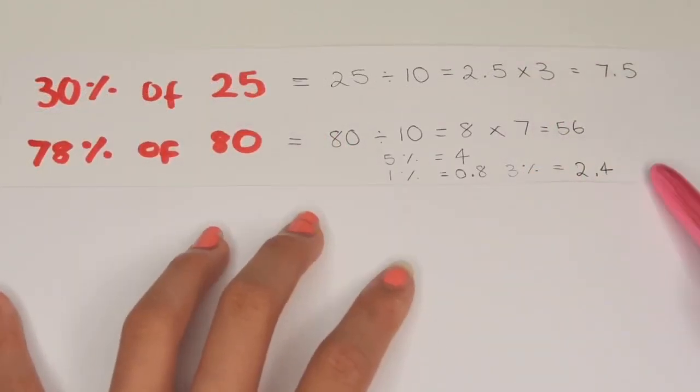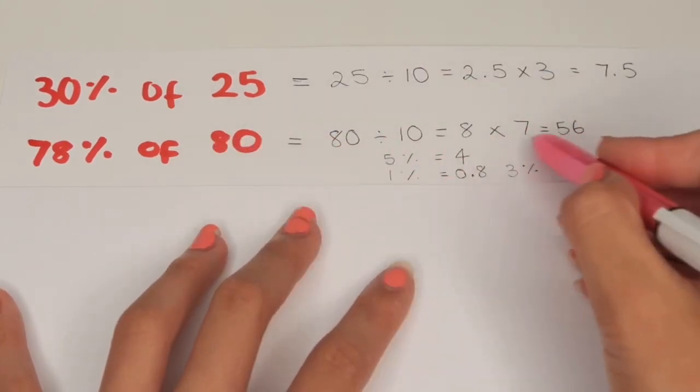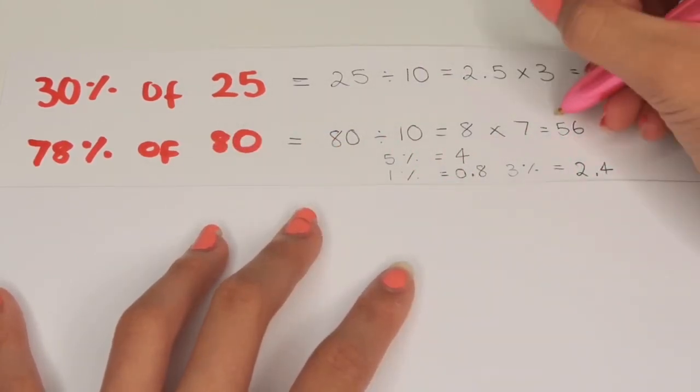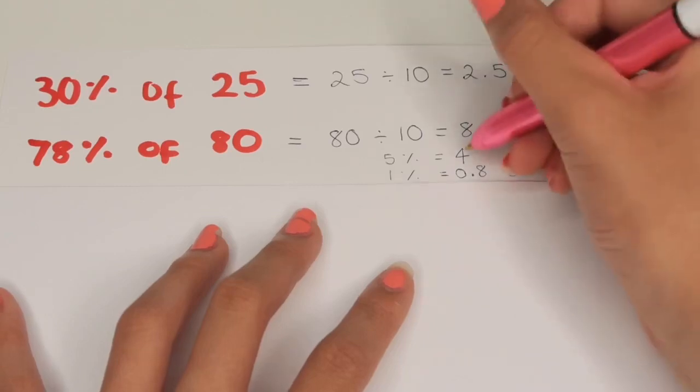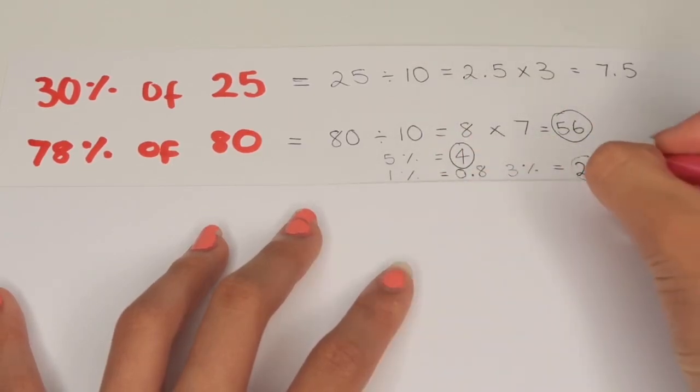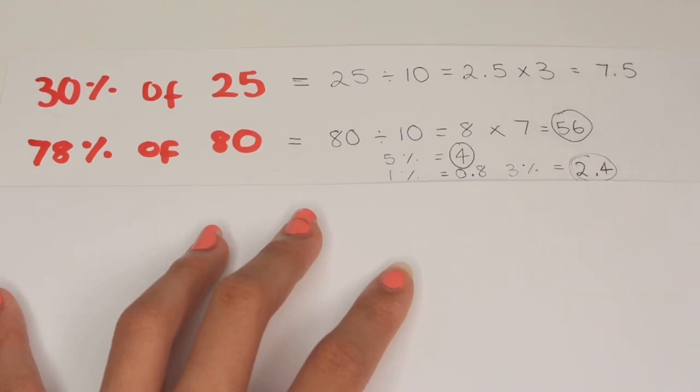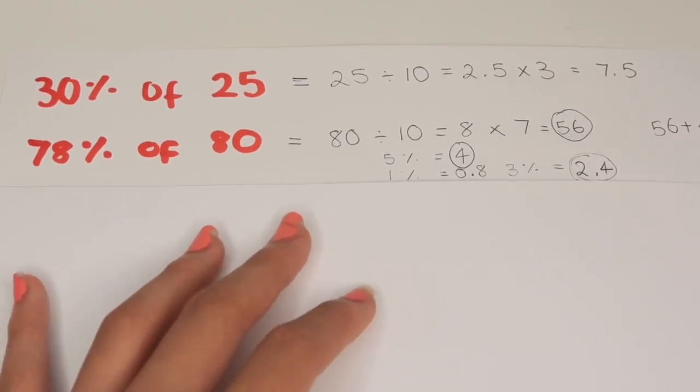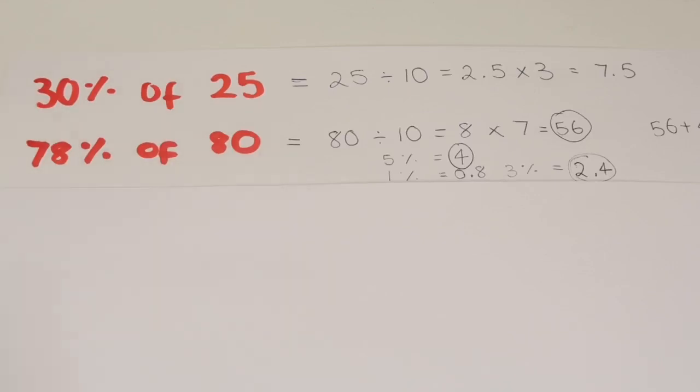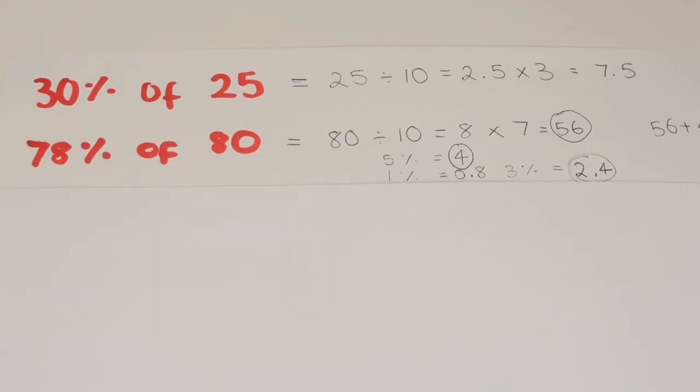This one is a bit more tricky. First you do 80 divided by 10 which gets 8. Times this by 7 to get 70% which is 56. To make 8% you can have 5% and 3%. We know that 5% is 4 because we just halved the 10% we found. 1% is 80 divided by 100 which is 0.8. We do 0.8 times by 3 which gets us 2.4.